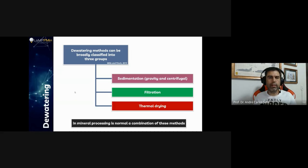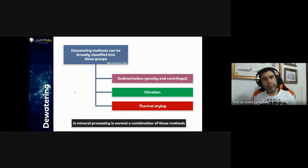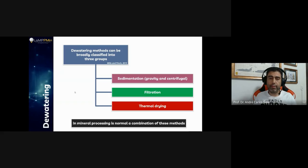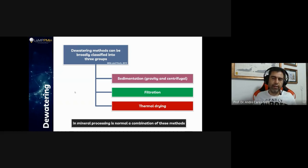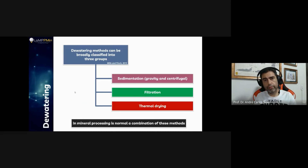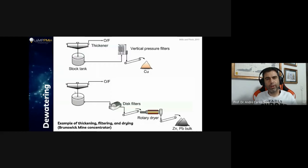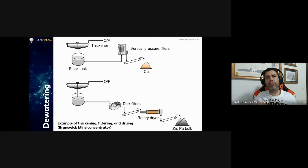There are three different dewatering approaches: first, sedimentation — which can use gravity alone or centrifugal force (centrifugal sedimentation); second, filtration; and third, thermal drying. We avoid thermal drying at all costs because of the high energy costs and the loss of water from the process. If possible, we stay with just the first two stages.